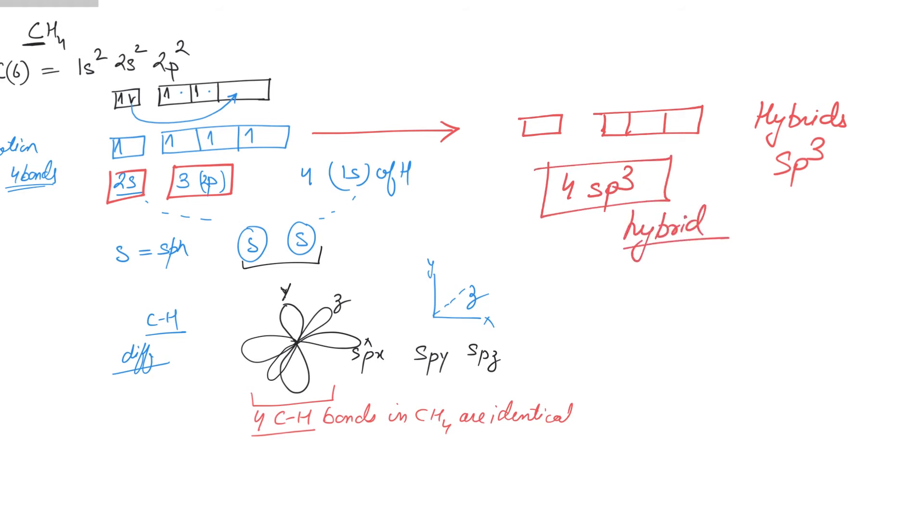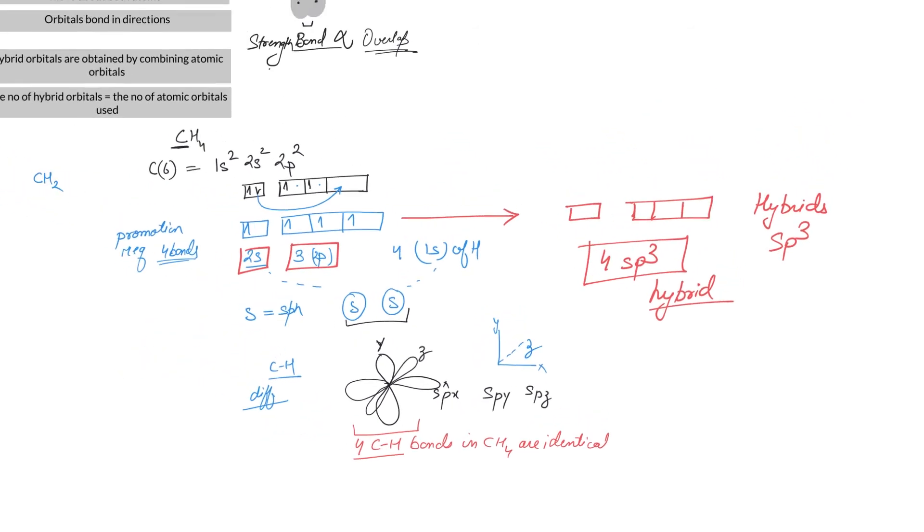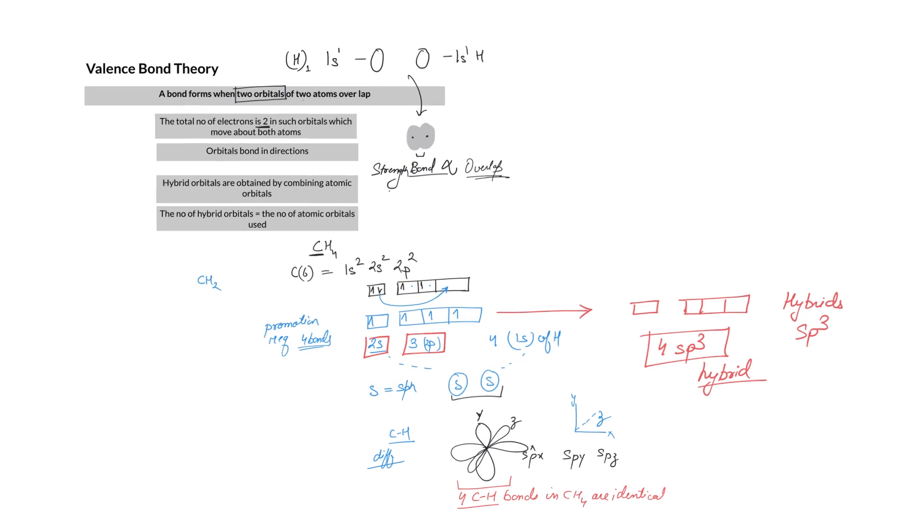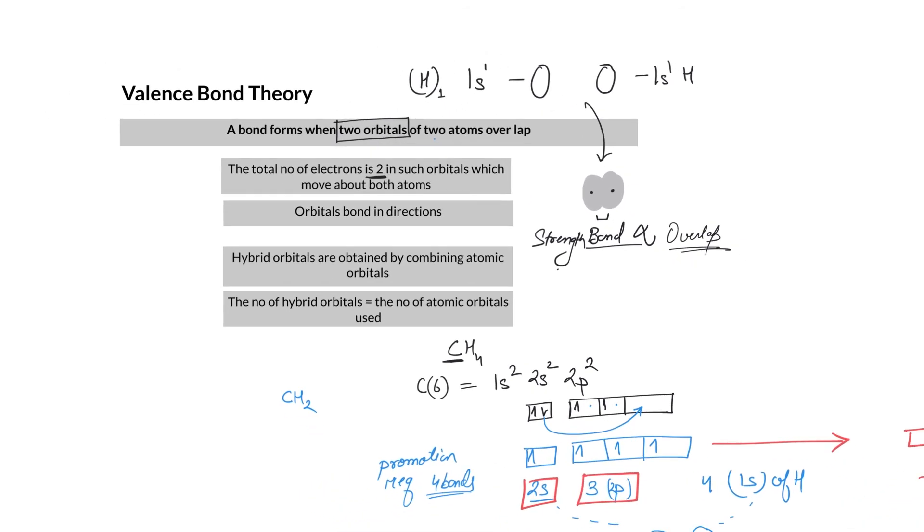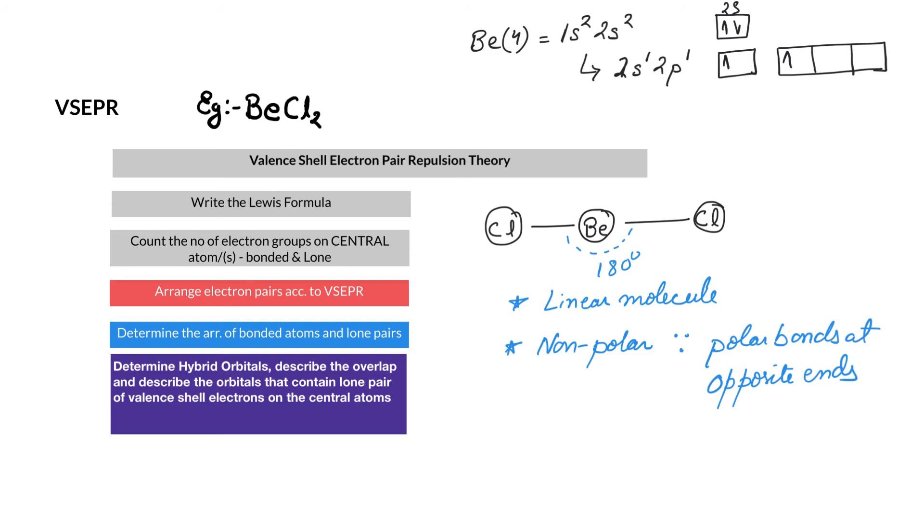This is the concept of valence bond theory. In our explanation ahead, we follow the same steps we did for VSEPR: write down the Lewis formula, count the total number of electron groups on the central atom, and arrange them according to VSEPR—that means minimum repulsion. Finally, find the bonded atoms.